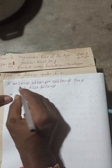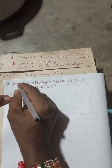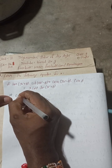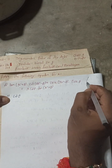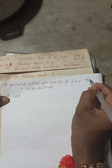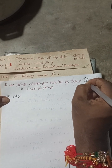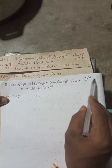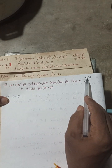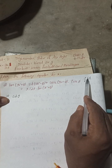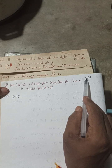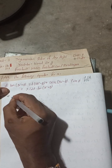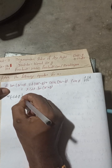For tan(90° + θ): the CAST rule tells us that 90° + θ lies in the second quadrant. In the second quadrant, only sine and cosec are positive, so tan will be negative. Therefore tan(90° + θ) = −cot θ.